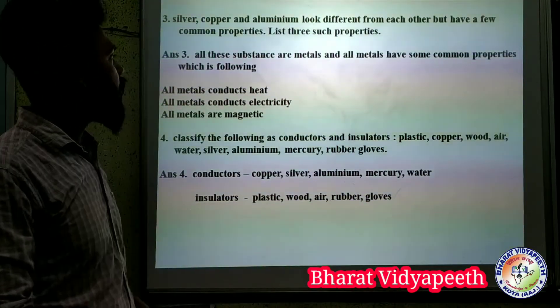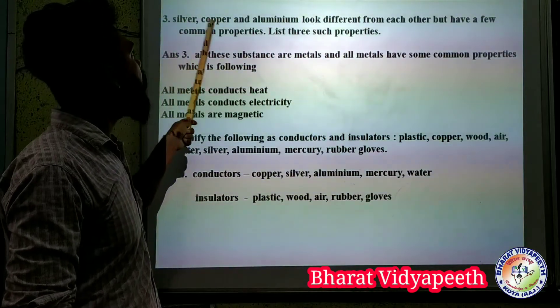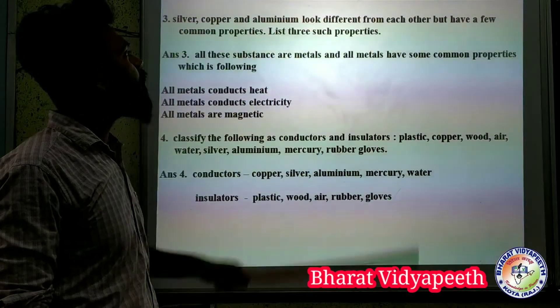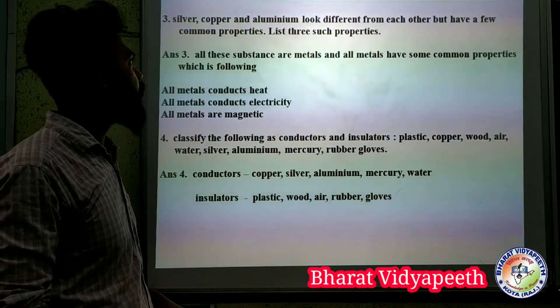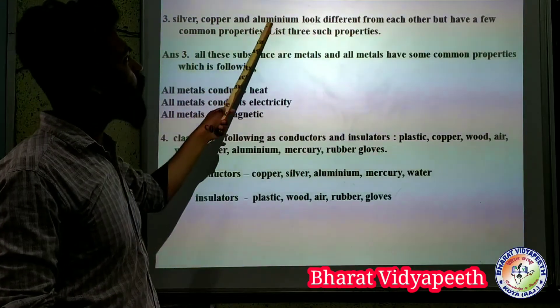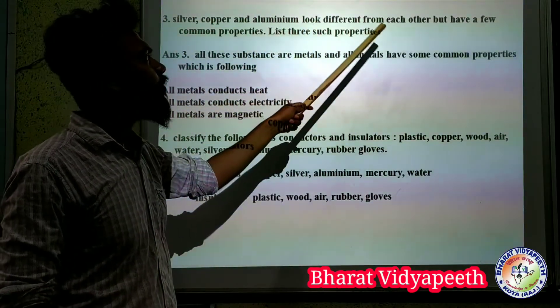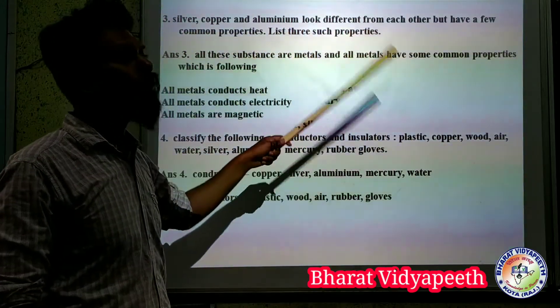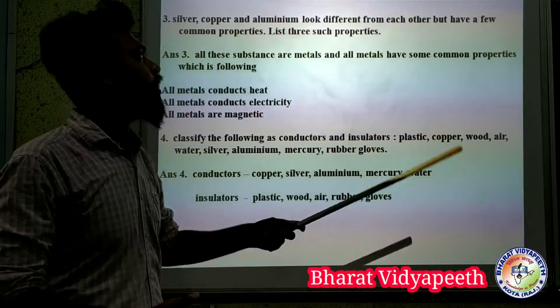The next question is: silver, copper, and aluminium look different from each other. How do they differ from each other? About two important properties. Silver, copper, and aluminium look different from each other and have different appearances.